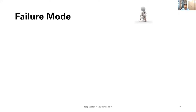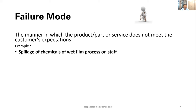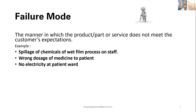For any process there is a possibility of failure. Failure is the manner in which a product, part, or service does not meet customer expectations. For example, spillage of a chemical on a staff member is a failure of the hazardous material handling process; a wrong dosage to a patient is a failure of medication management; no electricity in the patient ward due to non-switching is a failure of the power changeover process; and non-functioning of a defibrillator is also a failure.